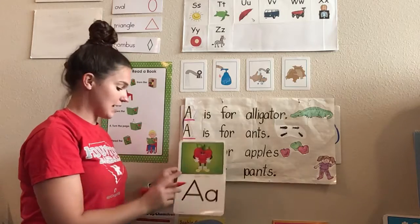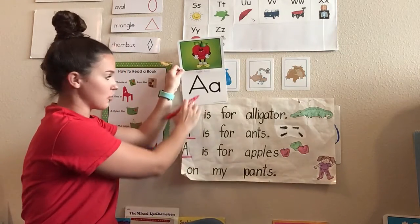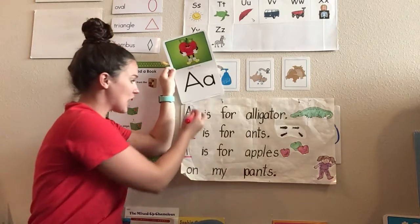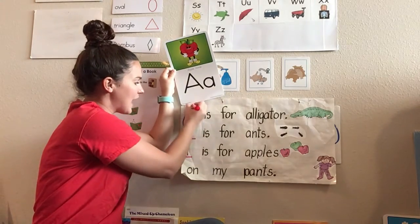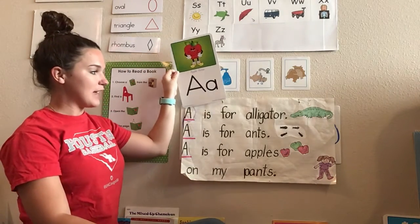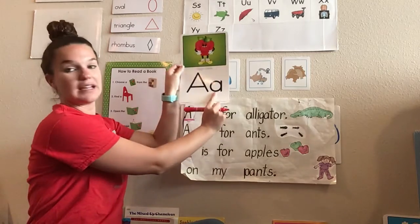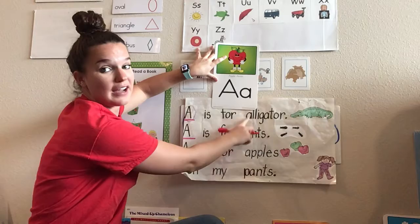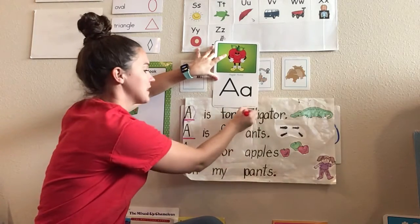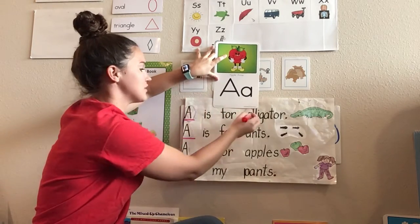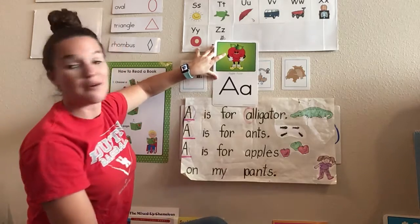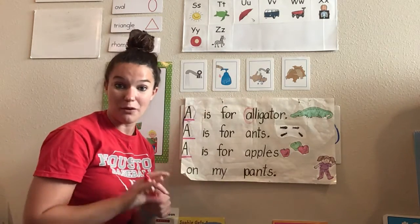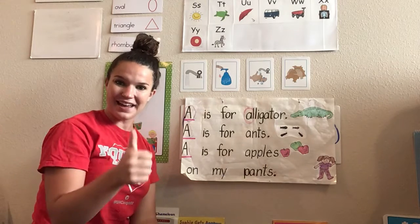So this is called a capital A, and this is a lowercase a. And you're going to look for them all over. The first one that I see is right there. Are those the same? Yes, they are the letter A. Good job. Now a lowercase a, or the small a, is right here. Are those the same? Yes. So I am going to circle that. Now it's your job to point to other A's that you see in our poem. Good luck.